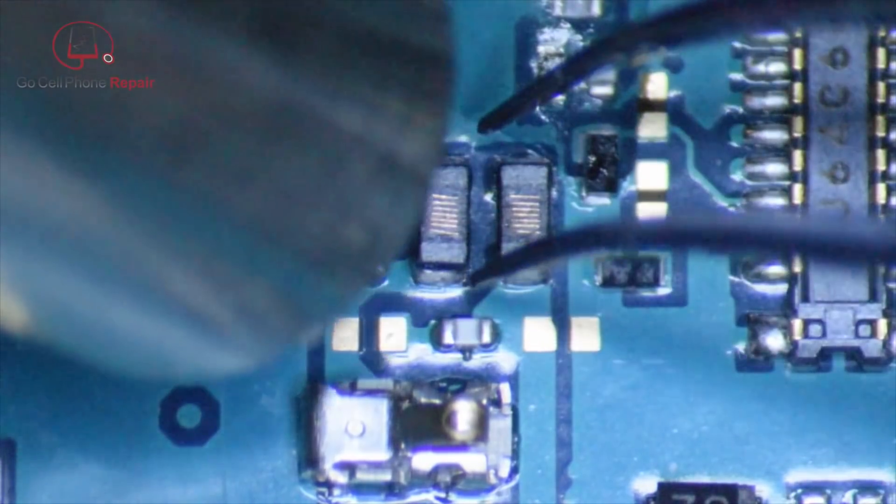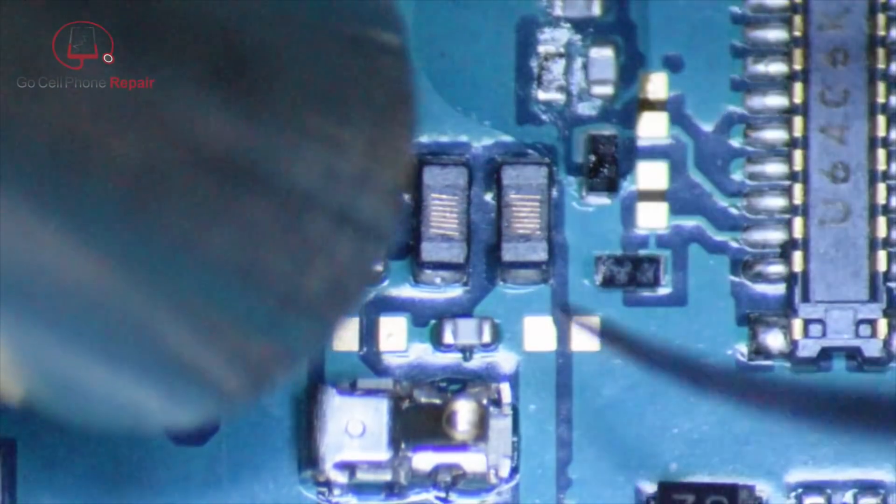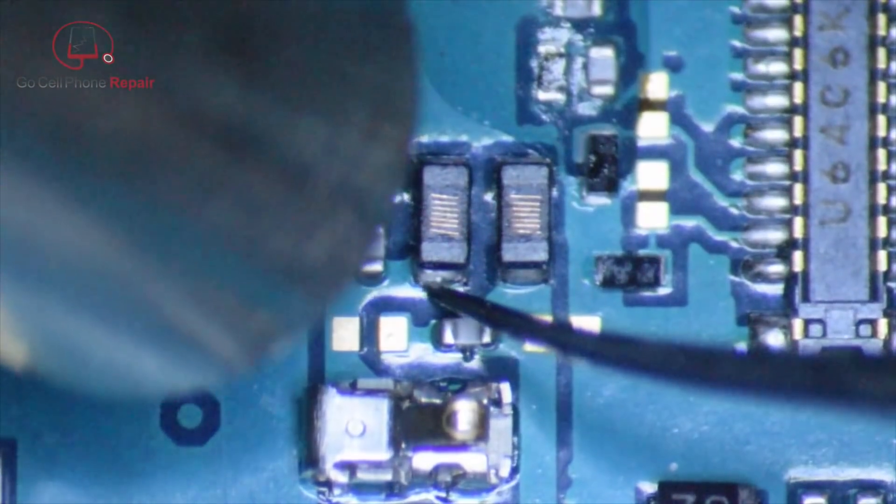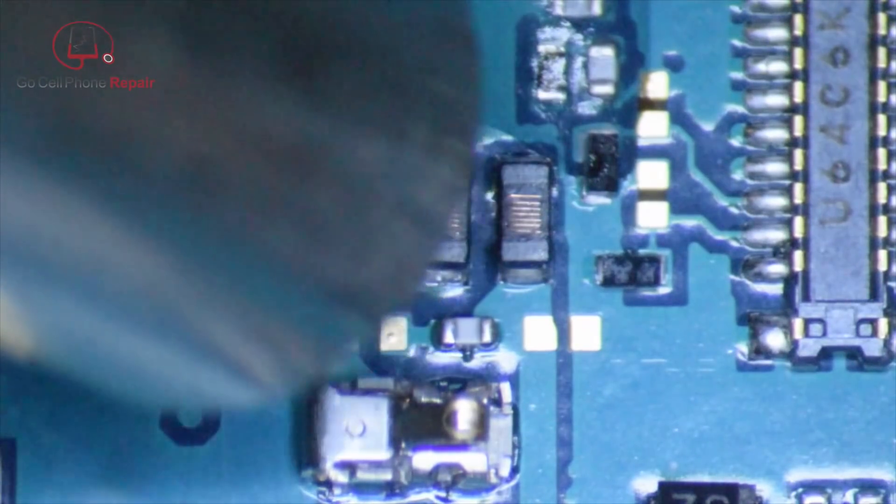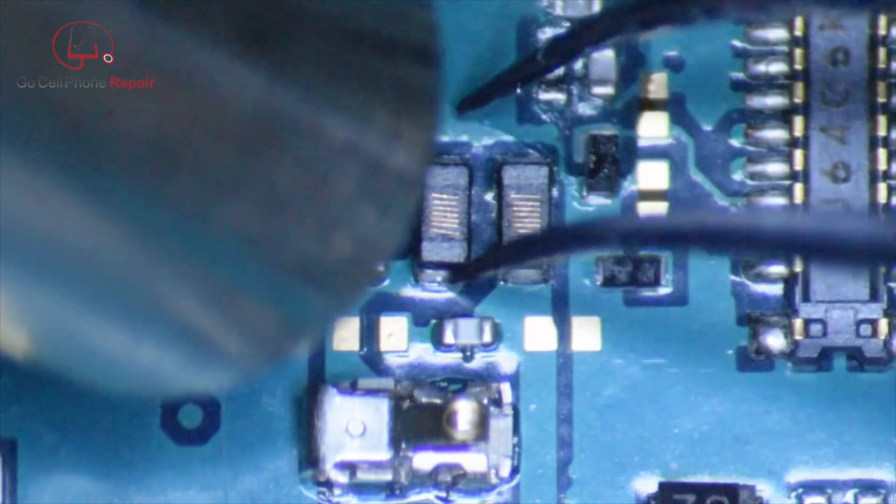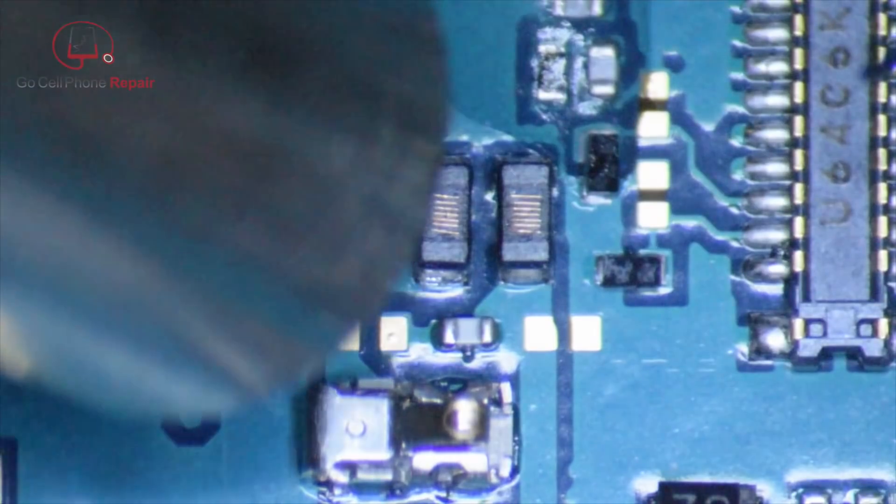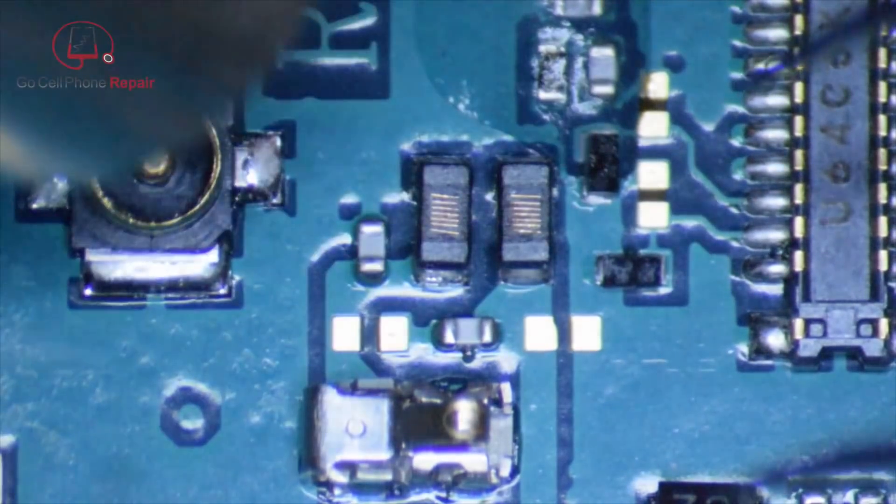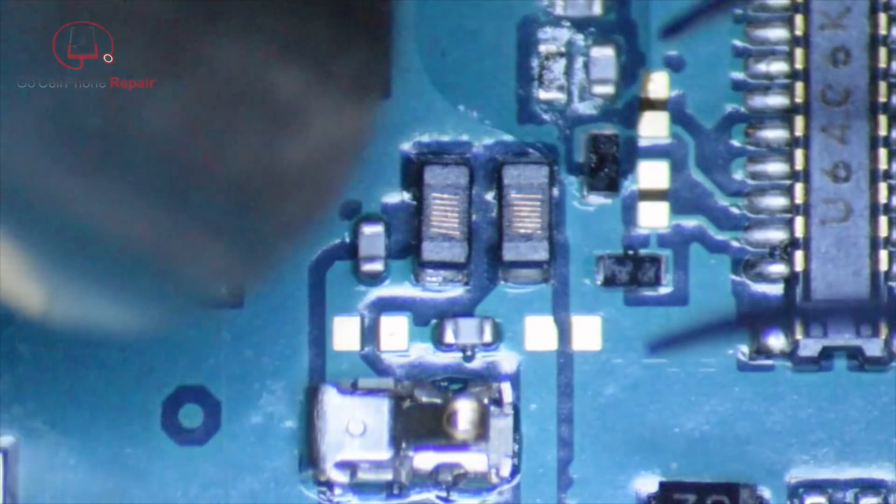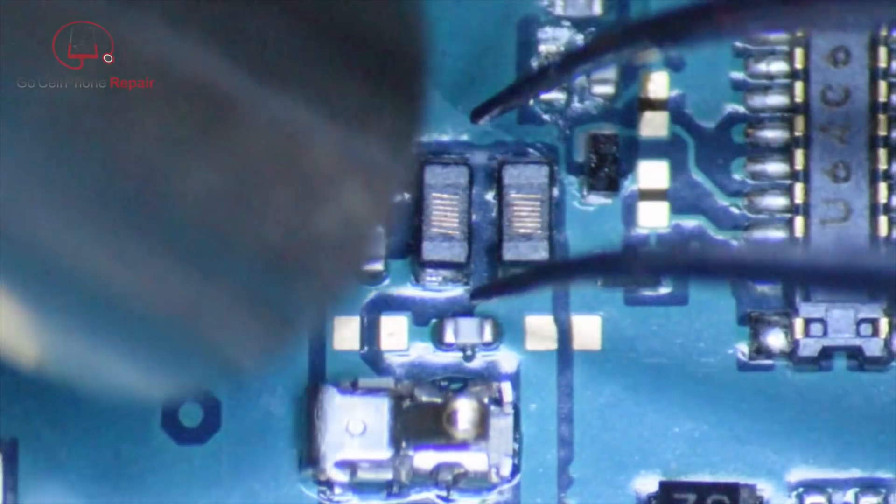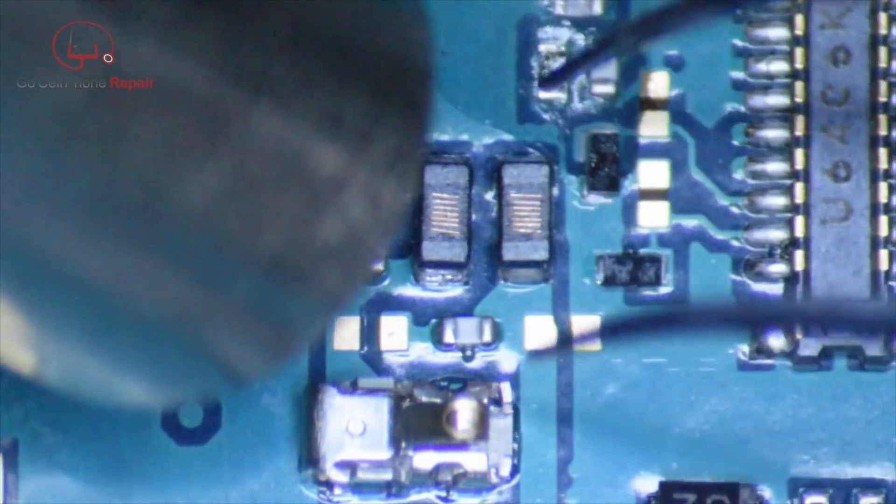In this case, I was using the Quick 861DW set at 385, and I had my airflow at 30. And as you can see, I'm almost right on top of the component itself. And my nozzle, I want to say is the four millimeter bent tip. So if that helps at all, but again, use your judgment here.